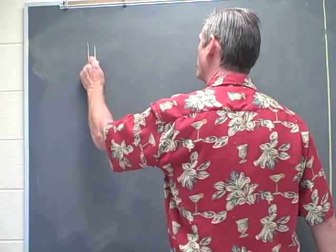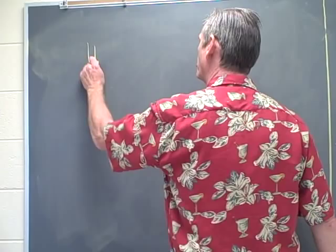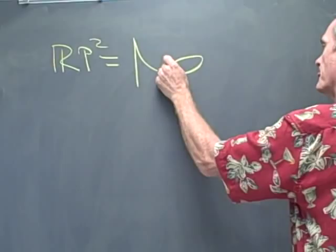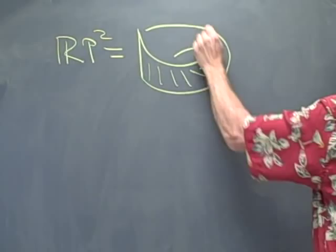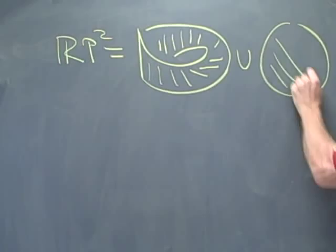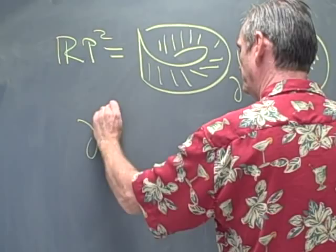The real projective plane can be thought of as the union of a Mobius band and a disc, where the union occurs along the common boundary of the two. So the boundary of a Mobius band,